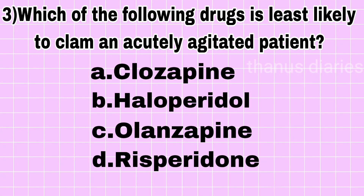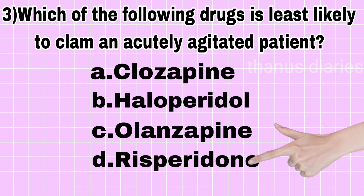Next question: which of the following drugs is least likely to calm an acutely agitated patient? Clozapine, Haloperidol, Olanzapine, or Risperidone? The answer is Risperidone.